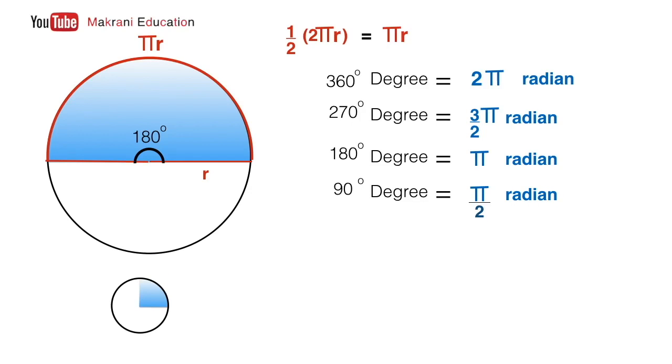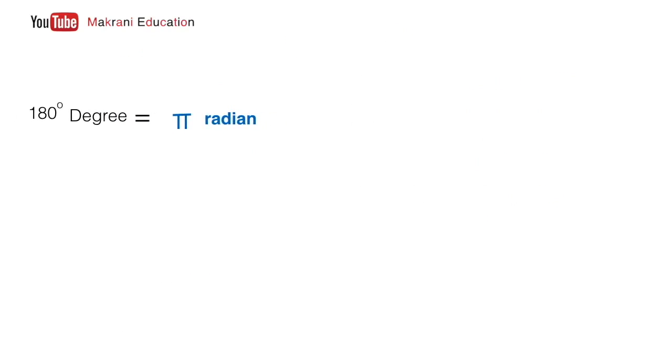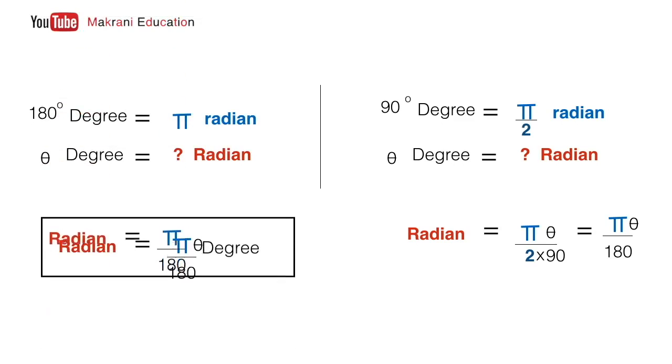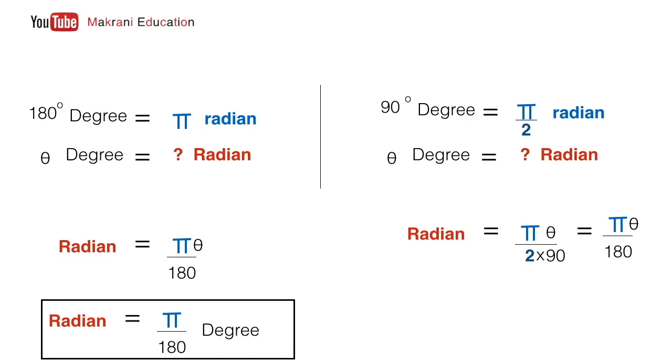Taking 180 degrees equals π radians, what about any theta degrees? We can get the relation for radians by cross-multiplying. If for 180 degrees it is π radians, then for any theta degrees, it will be π/180 times theta. So the general result is: radians equals π/180 times any theta that is in degrees.